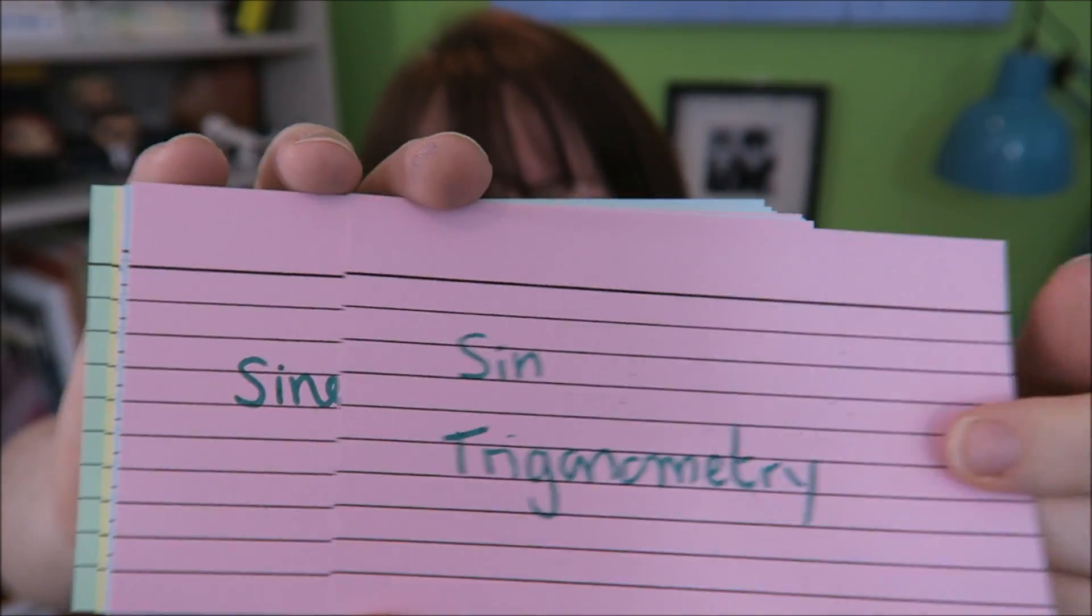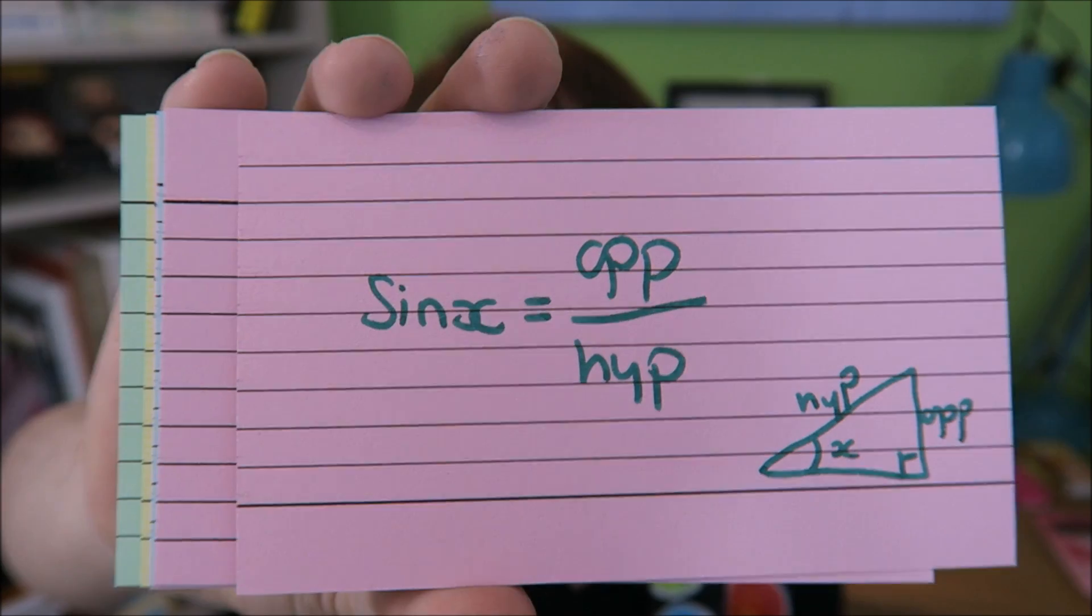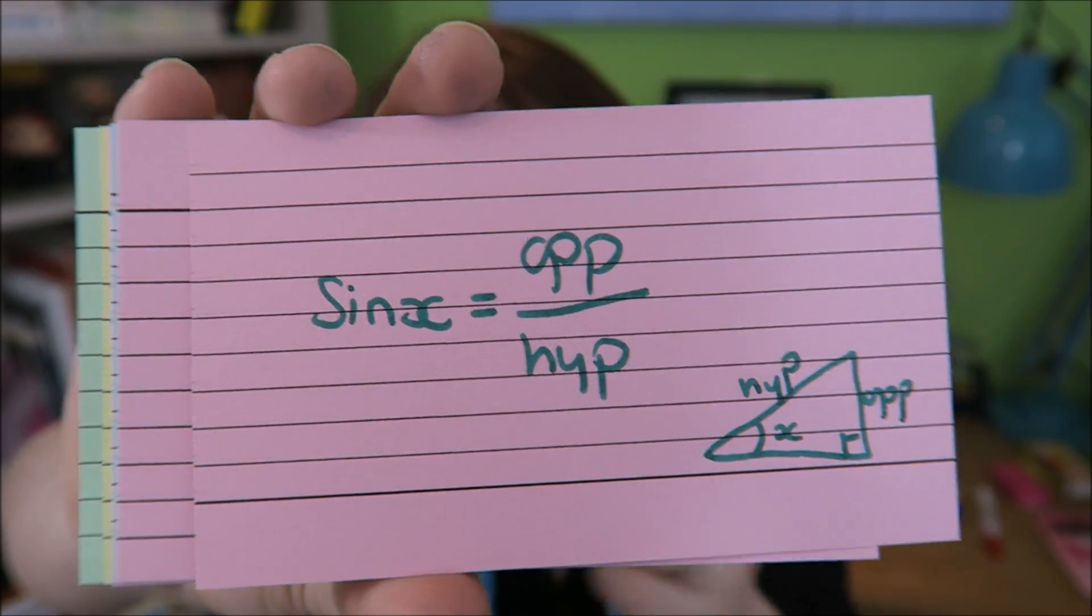Sine trigonometry for your right angle triangle. Where sine X is the opposite over the hypotenuse.